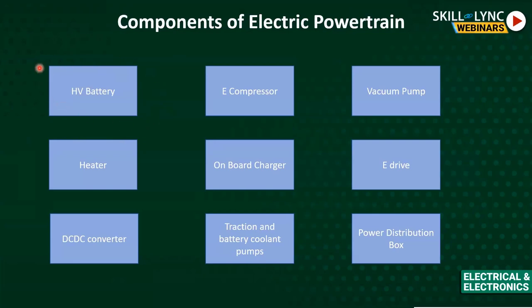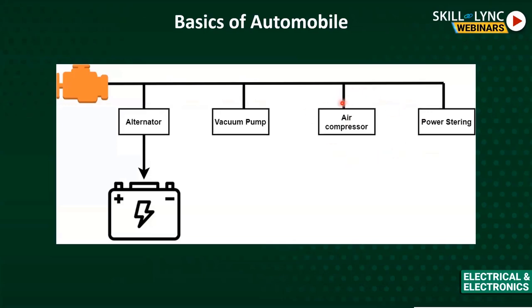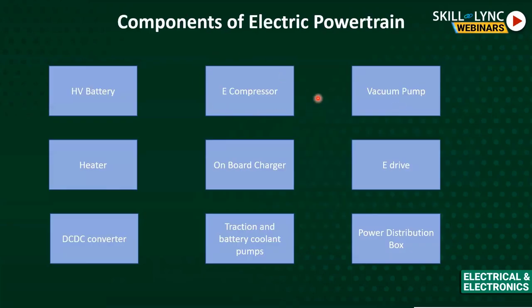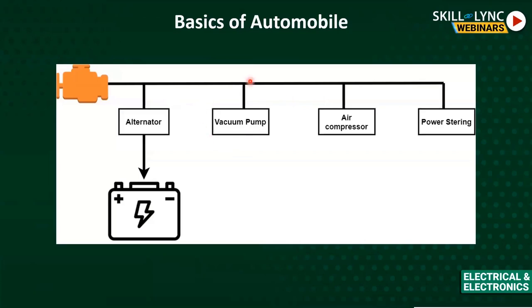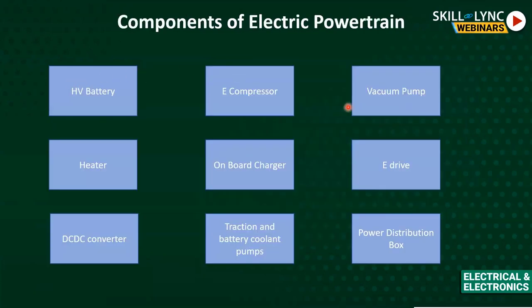The HV battery stores energy — think of it as the fuel tank of the electric vehicle, equivalent to the diesel or petrol tank of a combustion engine. The e-compressor is an electric compressor, replacing the mechanically coupled air compressor of the ICE. The vacuum pump in an ICE is mechanically coupled to the engine, but in an electric powertrain with no engine, it is driven by a DC electric motor.